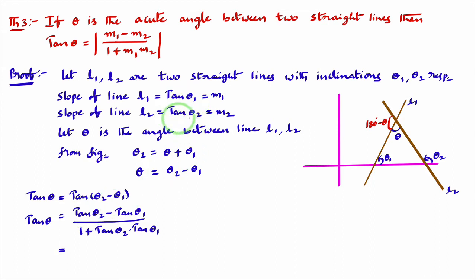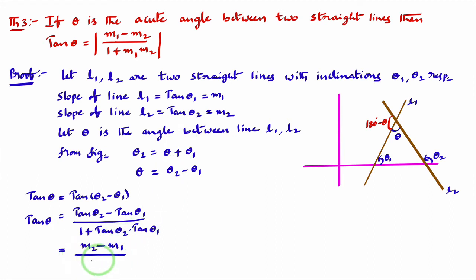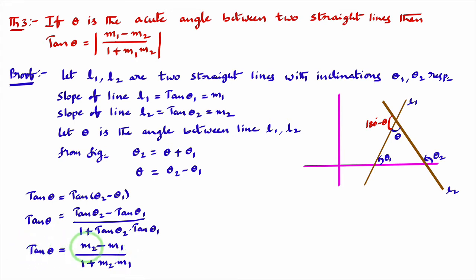Now, tan theta2 is the slope of the second line, which we considered as m2, and tan theta1 is the slope of the first line, which we considered as m1. So tan theta equals m2 minus m1 divided by 1 plus m1 into m2. I will consider this as equation 1.